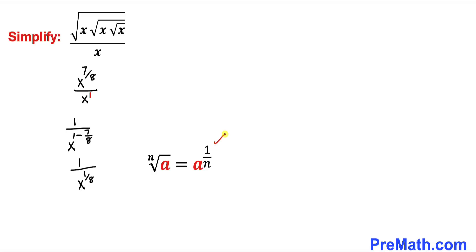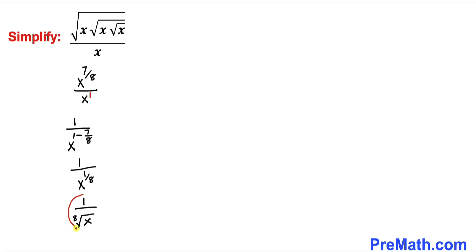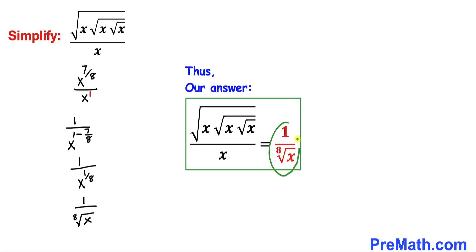Recalling the basic rule, x to the power 1 over 8 can be written as the 8th root of x. So the whole expression simplifies to 1 divided by the 8th root of x — and that's our simplified answer to the given expression. Thanks for watching and please don't forget to subscribe to my channel for more exciting videos.